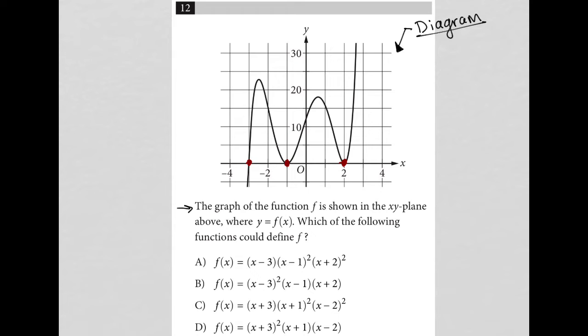So for instance, this first x-intercept goes through the x-axis at negative 3. That tells me that one of my binomials should be x plus 3. It's always the opposite sign of the x-intercept itself.